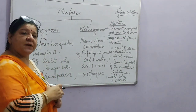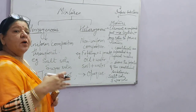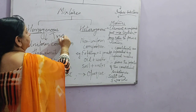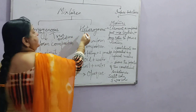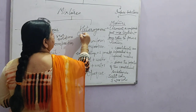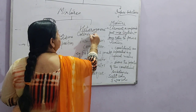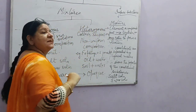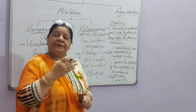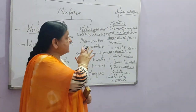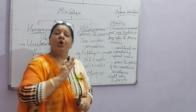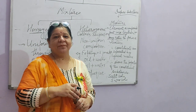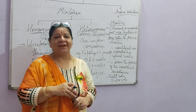Homogeneous and heterogeneous mixtures are also further classified. Homogeneous mixtures are mostly known as true solutions, while heterogeneous mixtures are either colloids or suspensions. Colloids and suspensions will be covered in the next video. Till then, revise this because these are the basic things you should know. Keep studying and do not forget to subscribe to the channel.